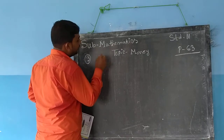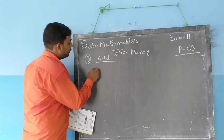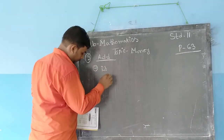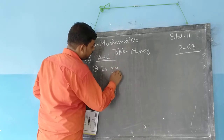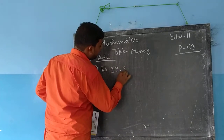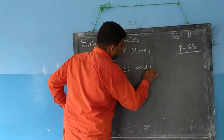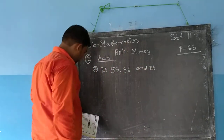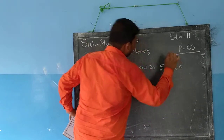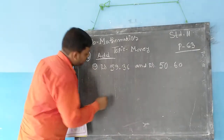Paise addition. Let's add the following: Rupees 59.66 and Rupees 50.66 — how to add these together.